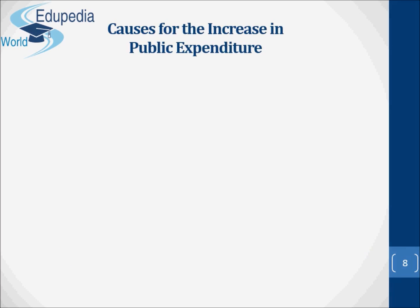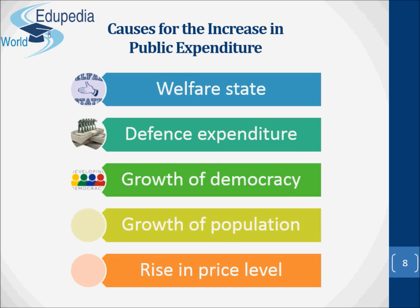One of the most important features of the present century is the phenomenal growth of public expenditure. Some of the important reasons for the growth of public expenditure are the following. One, the welfare state. Modern states are no more police states. They have to look after the welfare of the masses, for which the state has to perform a number of functions. They have to create and undertake employment opportunities, social security measures, and other welfare activities. All these require enormous expenditure.